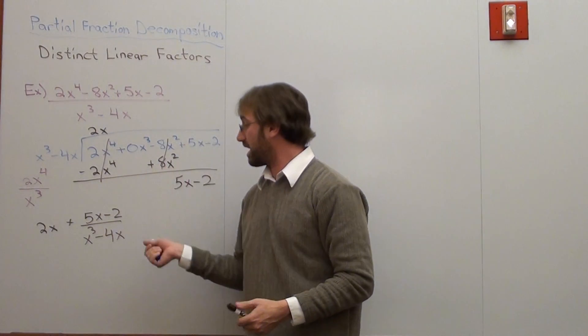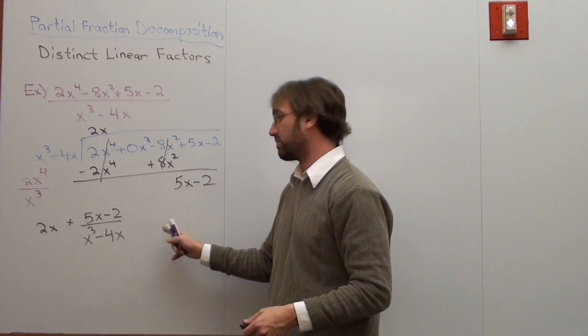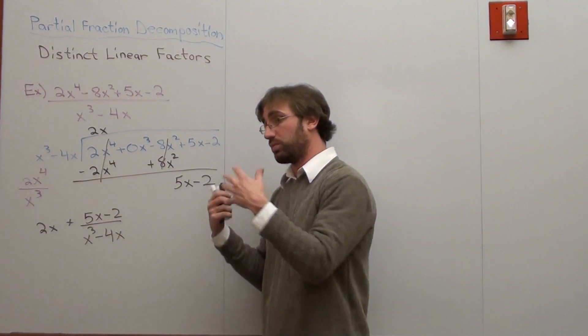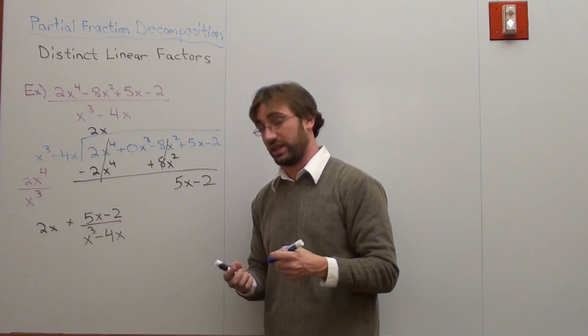Okay, so I'm back with this same exact problem where we have 2x plus 5x minus 2 over x cubed minus 4x. I'm going to use partial fraction decomposition in order to take care of this.